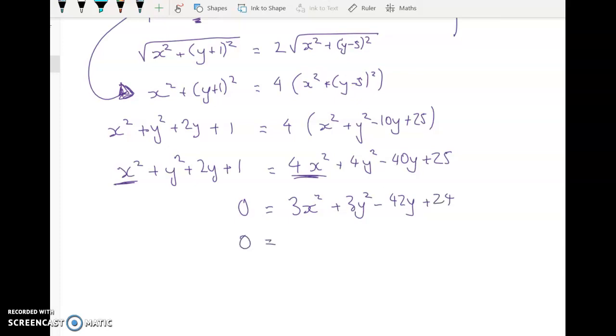Dividing everything through by 3 gives me 0 equals x squared plus y squared minus 14y plus 8. So there's no need to complete the square on that bit, it's just going to be x squared. Here we're going to have (y minus 7) squared. Now we've accidentally added in 49, we need to take it out.